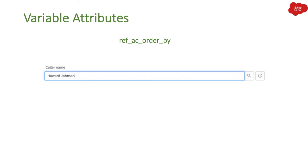The next attribute is ref_AC_order_by, also applicable for reference type variables. This allows you to sort the auto-complete records shown to end users. Similarly to the previous attribute, you set ref_AC_order_by equal to the field name you want to use for sorting the records that users see as part of auto-completion.